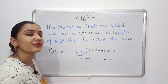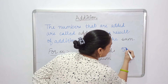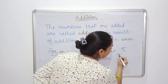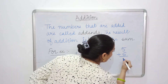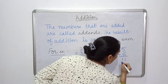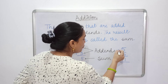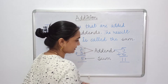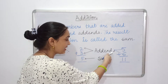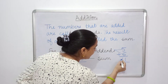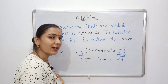Let's take one more example. 5 plus 6 equals 11. So 5 and 6 are the addends and 11 is the sum.